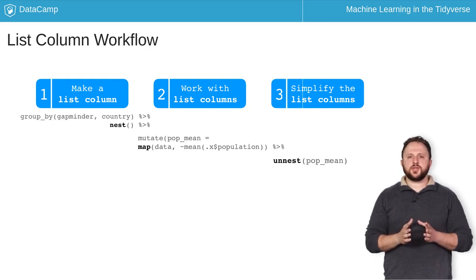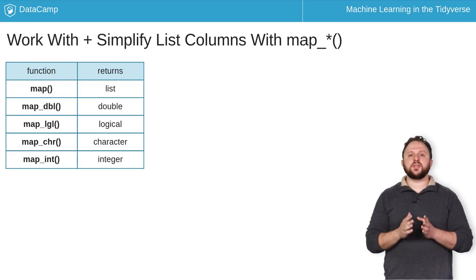In certain situations, you can combine the last two steps using another function from the map family. If you know that the output of the map function is a vector of a specific type, you can use a map function corresponding to that type to calculate the result and explicitly return a vector of the expected type.